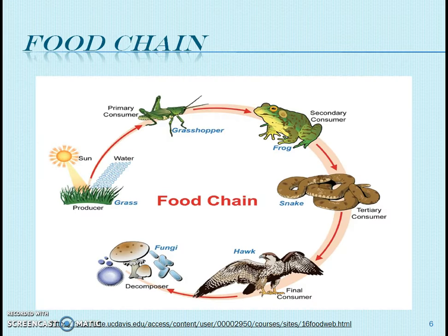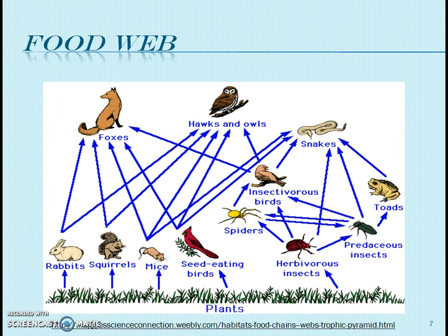The next and very important part is food chain. Each and every ecosystem consists of different types of food chains. A food chain is defined as the transfer of food energy from its source in plants through a series of organisms with repeated eating and being eaten. The next part is food web. A food web is an interlinking of a number of food chains. We can give many examples related to food chains.